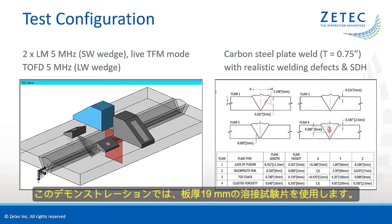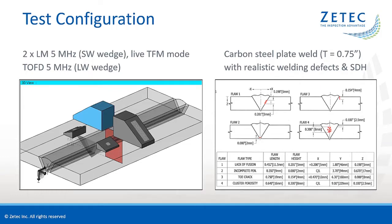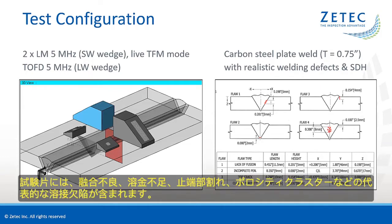For our demonstration, we are using a weld specimen with a wall thickness of 19 mm or ¾ inch. It contains typical manufacturing flaws: a lack of fusion, incomplete penetration, a toe crack, and a cluster of porosity.